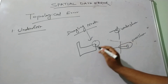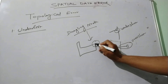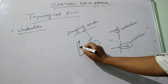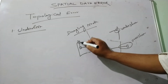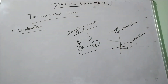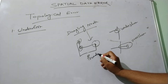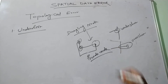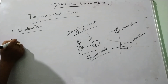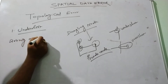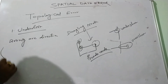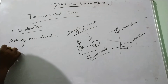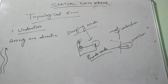Pseudo node: if a node appears in a continuous arc, this is called a pseudo node. Wrong arc direction: suppose a street is running in one direction, but we are digitizing it in the other direction — this is an error of wrong arc direction.